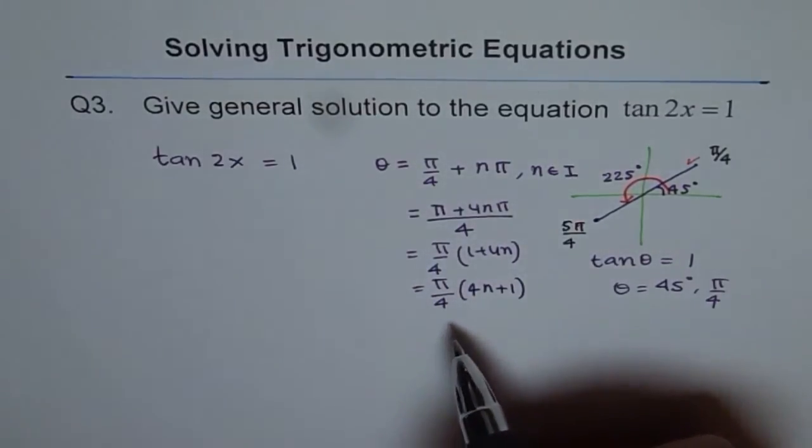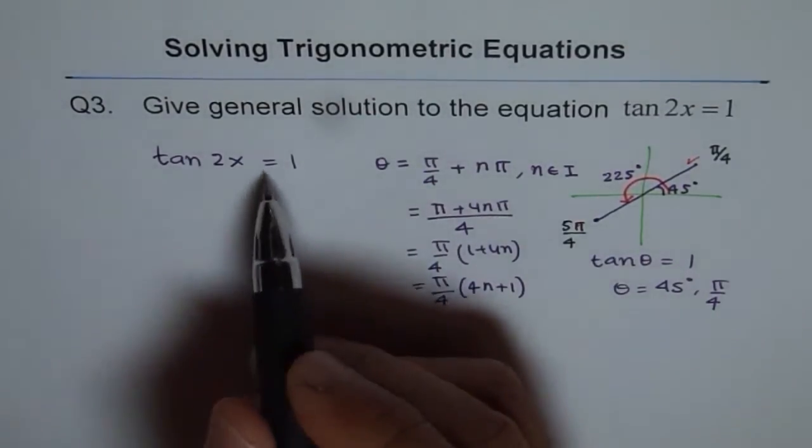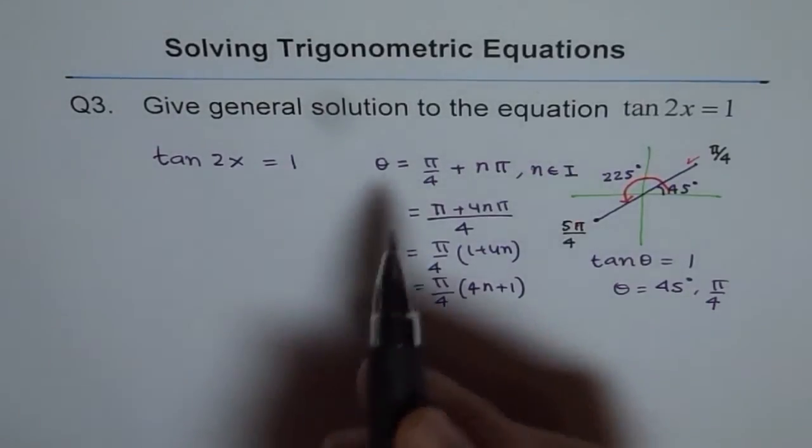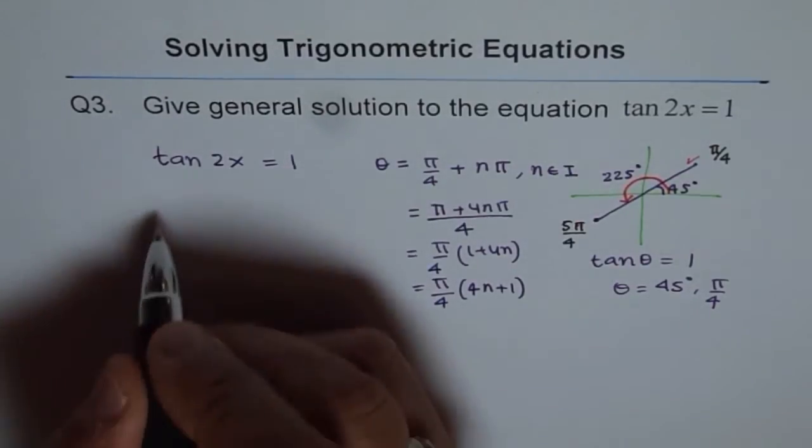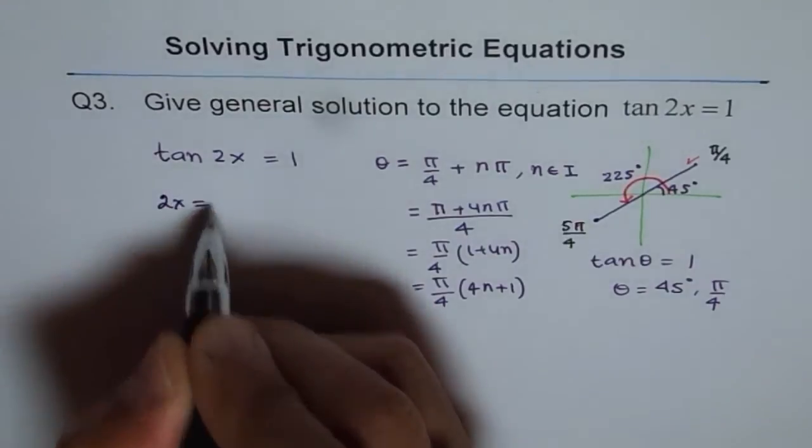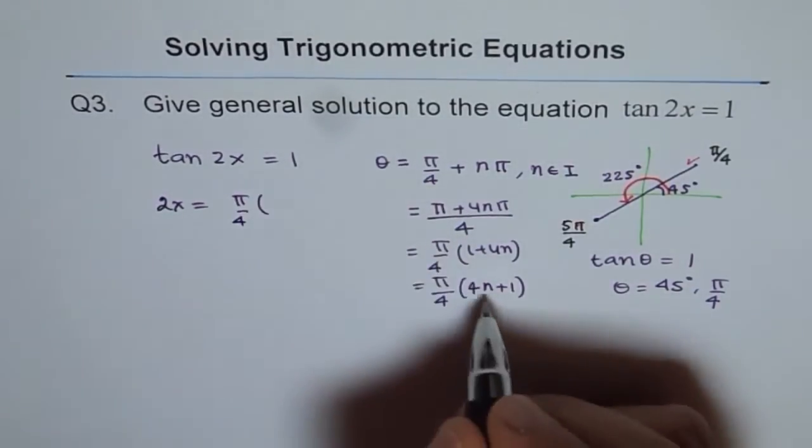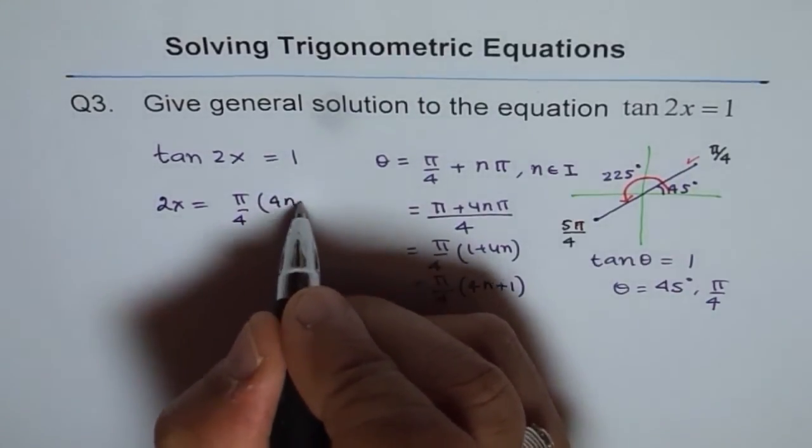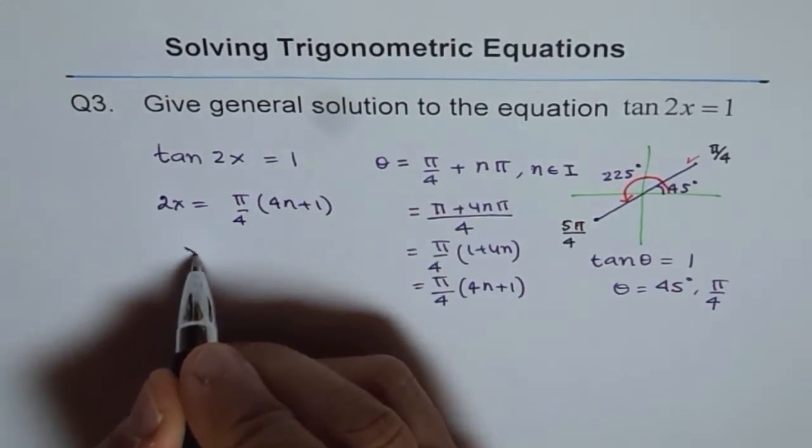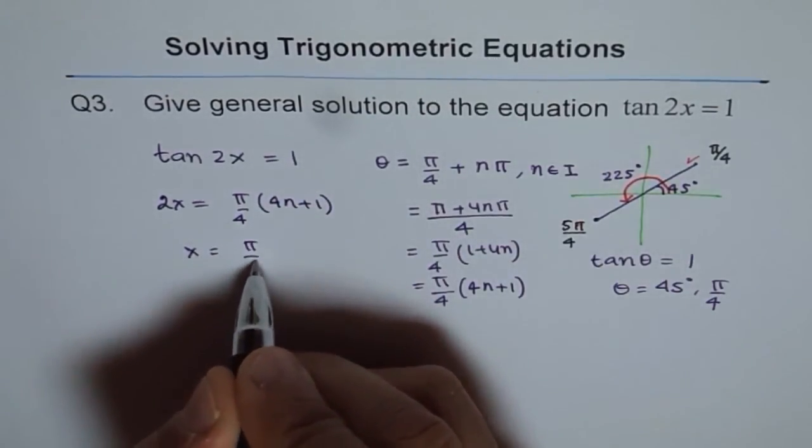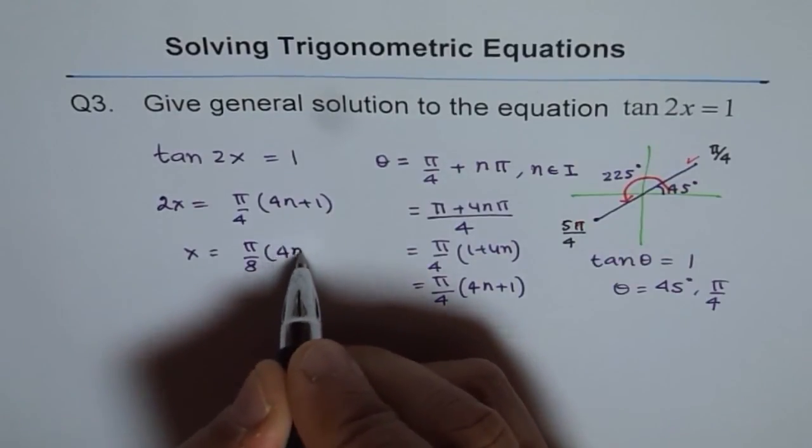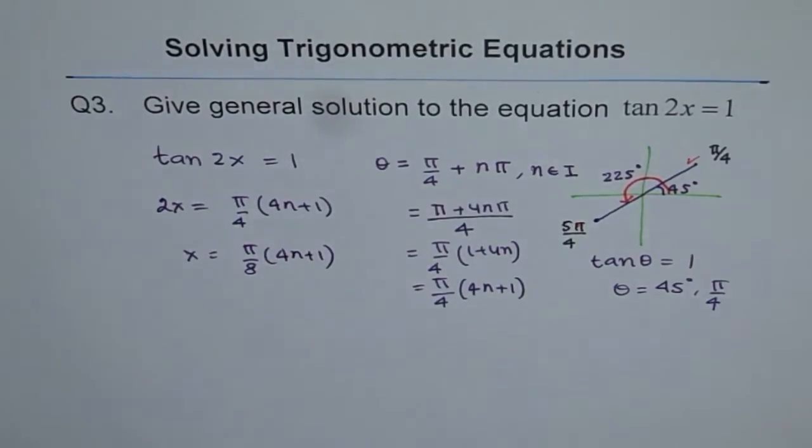Now, in our question, we have tan of 2x equals to 1. Therefore, 2x is equals to theta. So we can write this as 2x is equals to pi by 4 times 4n plus 1. That's the general solution. So x is equals to pi by 8 times 4n plus 1. So general solution for tan 2x equals to 1 can be written in this form.